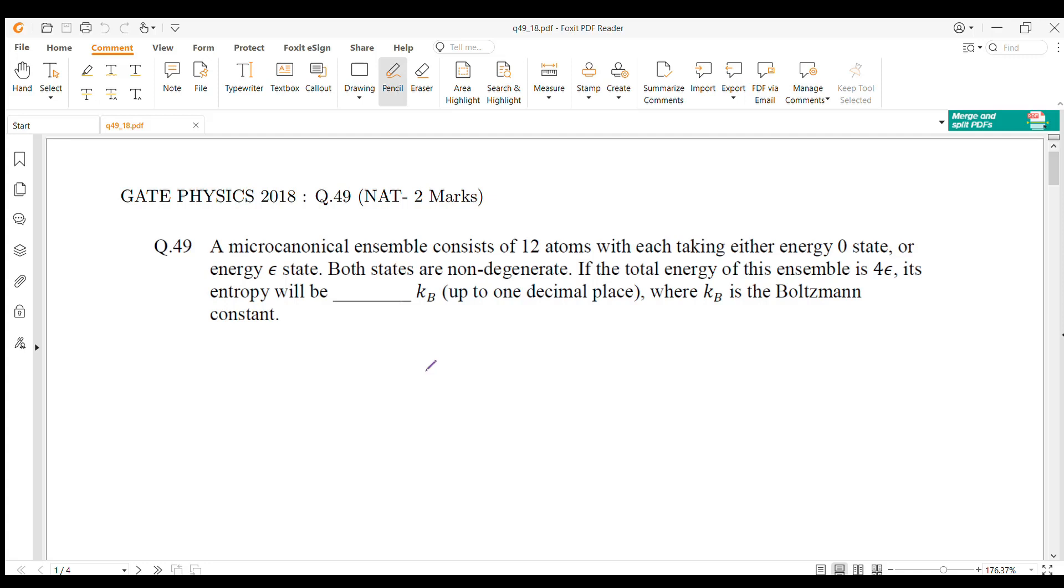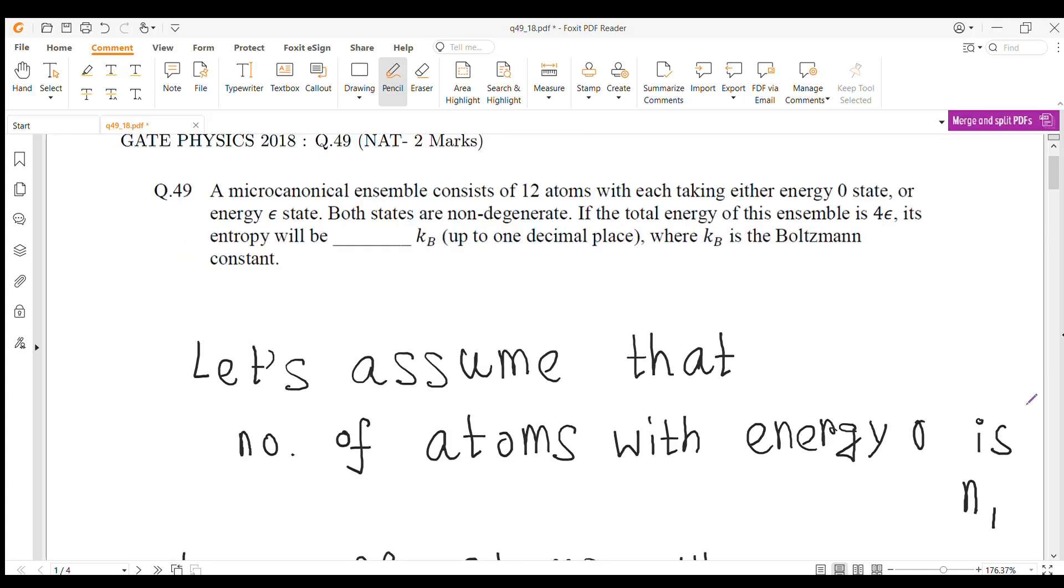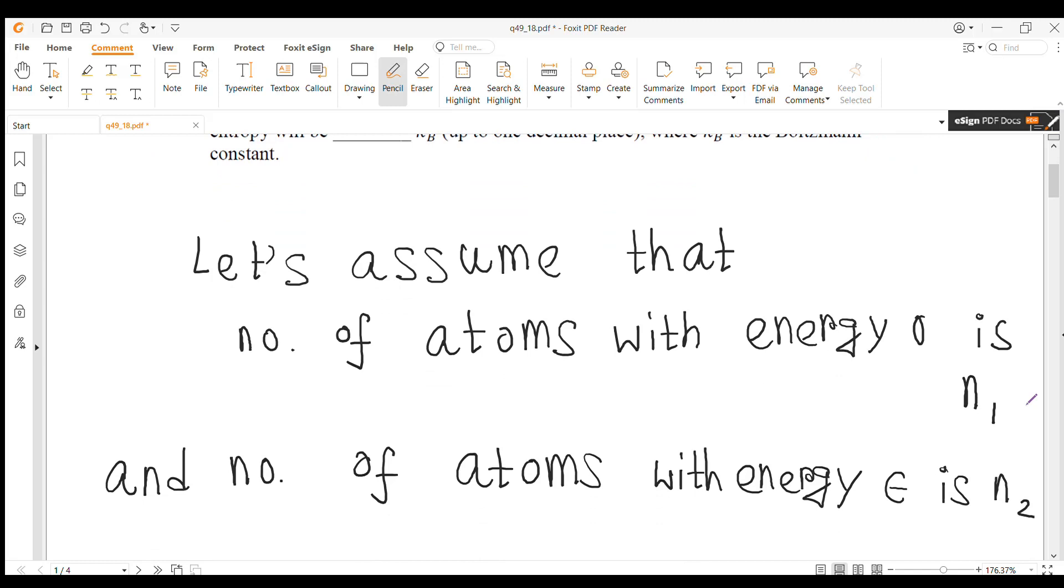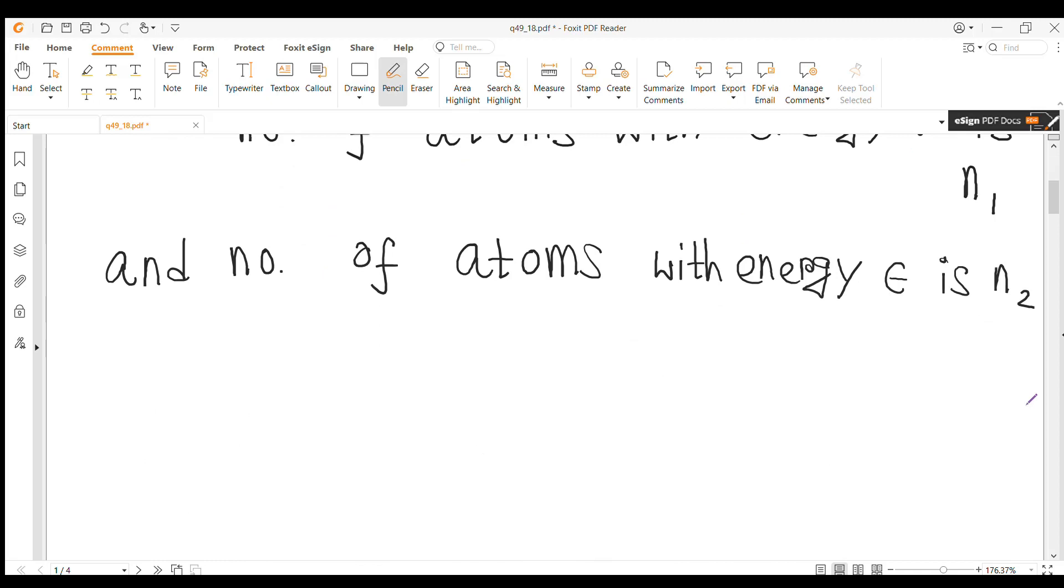Let's assume that the number of atoms with energy 0 is n1 and the number of atoms with energy epsilon is n2. We have total 12 atoms, so n1 plus n2 equal to 12.